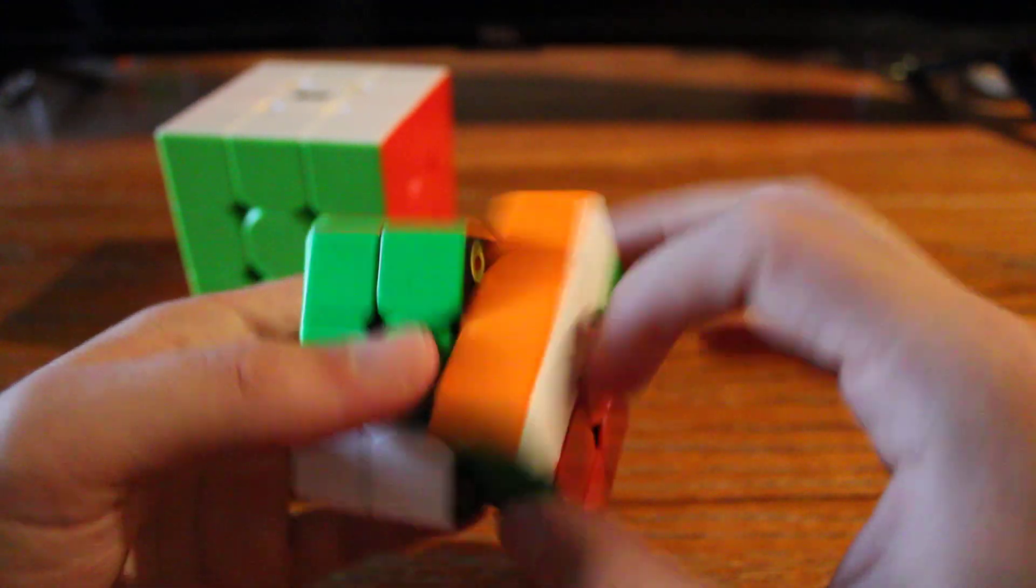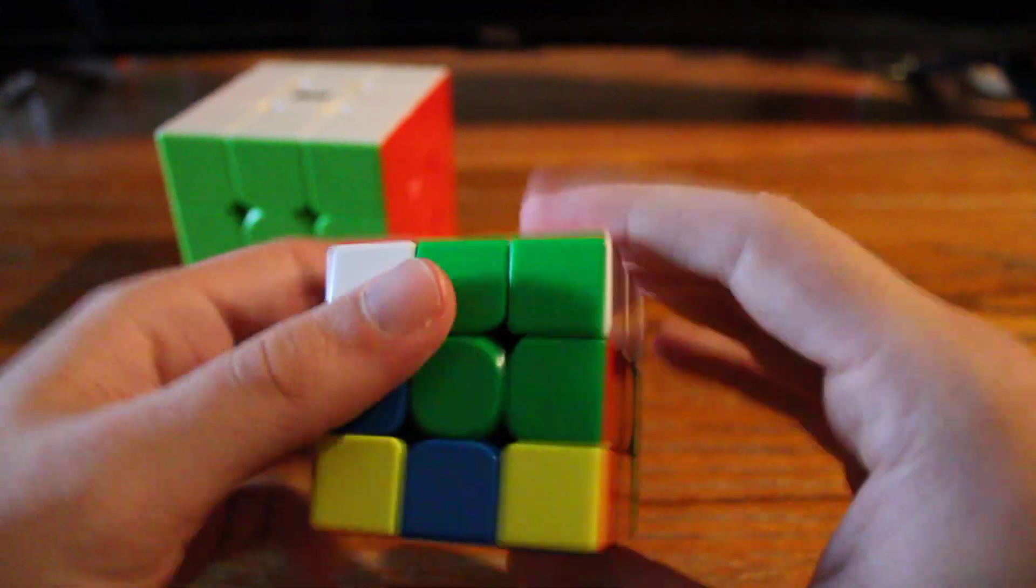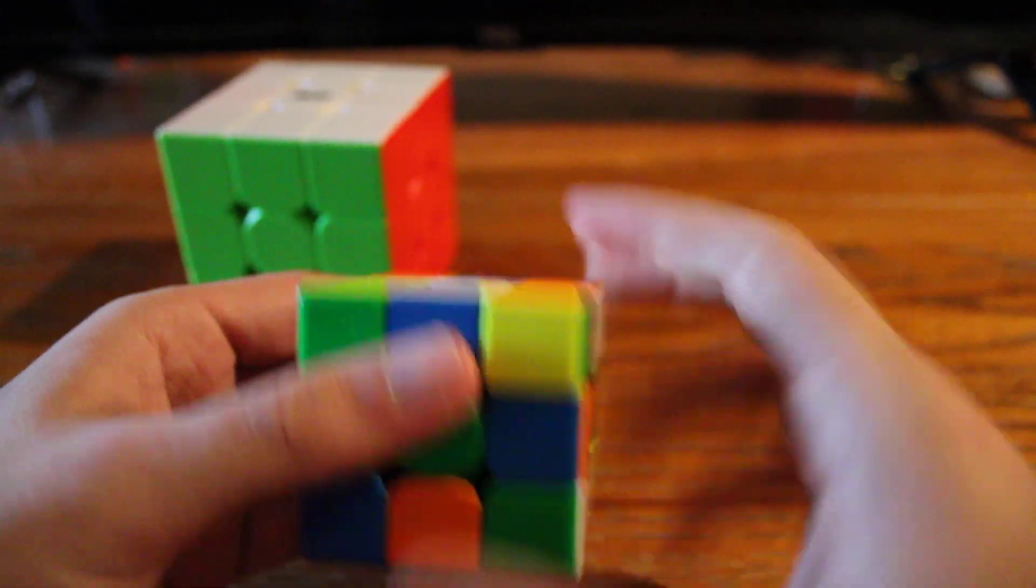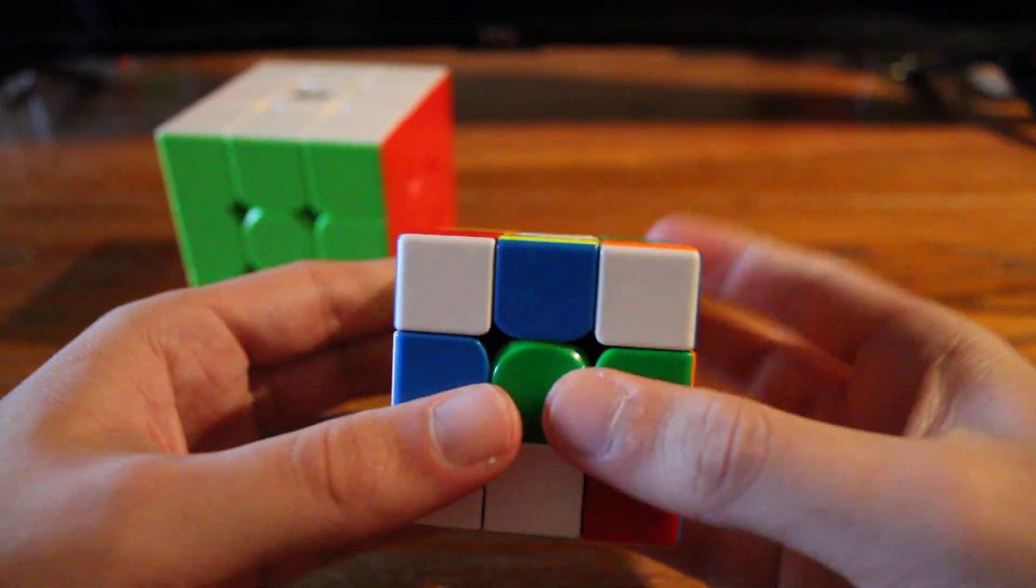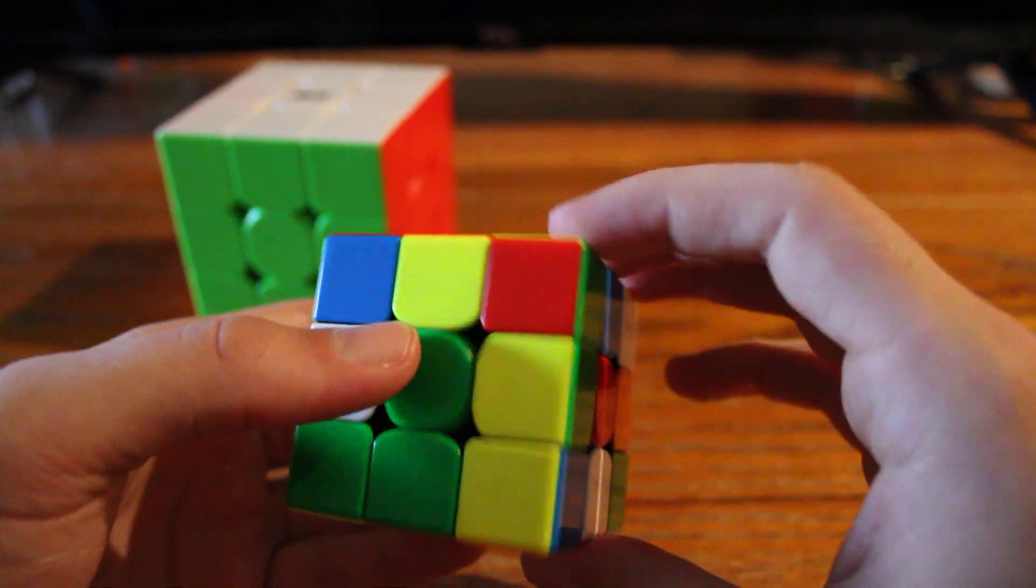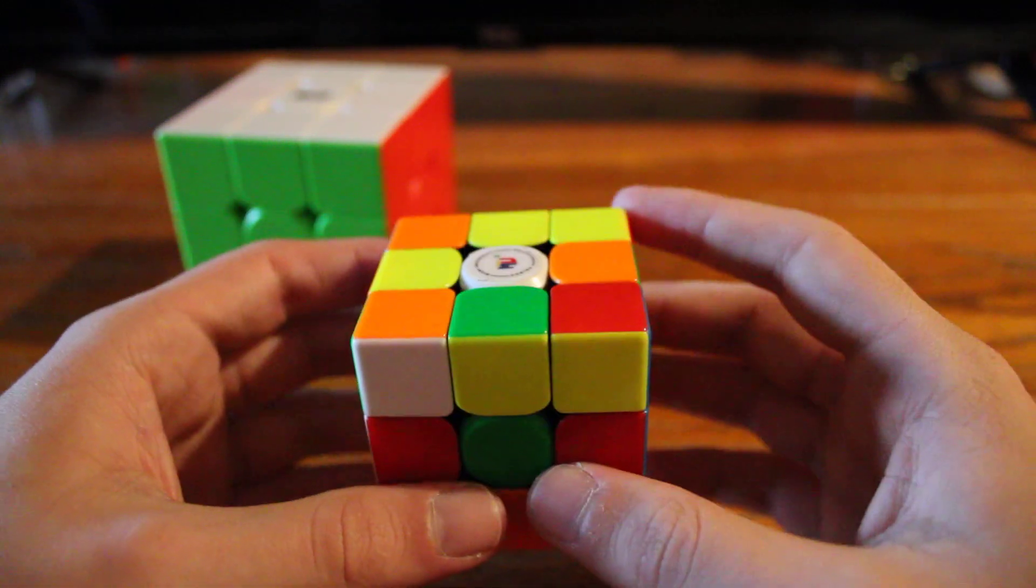So let's get started here. In the description, you will find the scramble as well as a link to alg.cubing.net detailing each move and a short explanation for each move as it occurs. So here's the scramble.